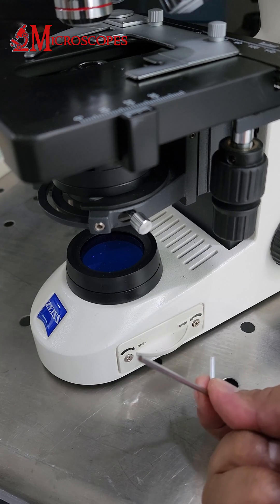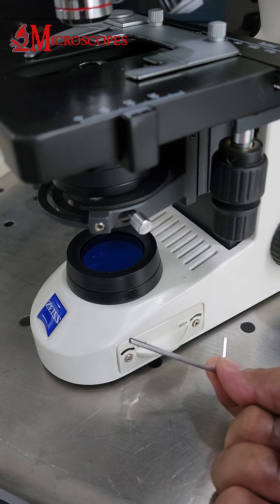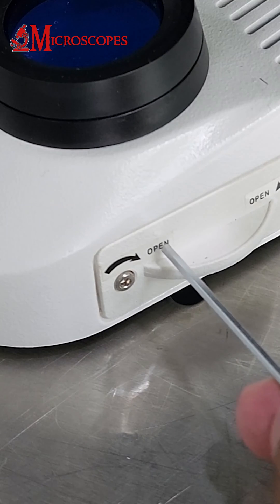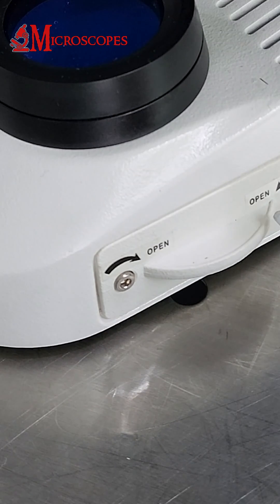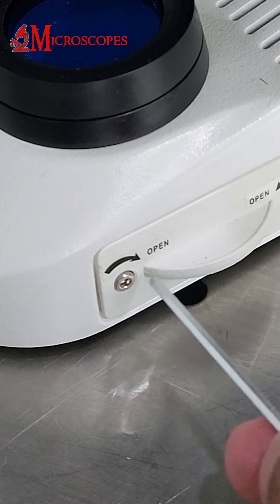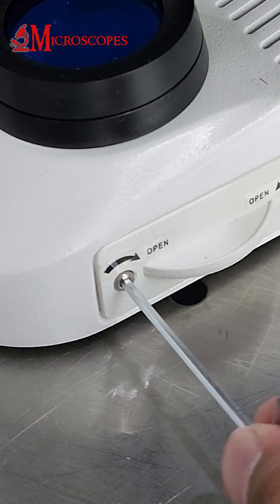How to Replace a Halogen Bulb in a Zeiss Primo Star Microscope. Start by using a 2.5 millimeter hexagonal wrench to wind along the arrow for about half a turn.